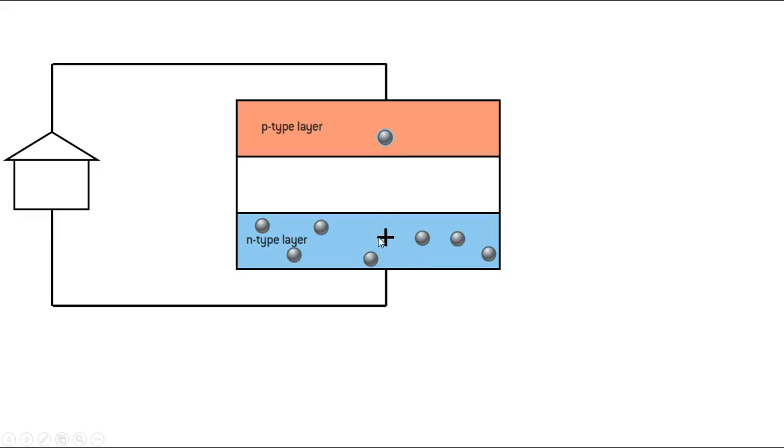In its wake, it leaves a positive ion. So there's now a positive ion. So what's this electron do? It wants to go back to the positive ion and rejoin, but it can't just go straight down. The only path it has to get back to the positive ion is through the circuit, which supplies energy to the house. And now it joins back with the positive ion, recombining.